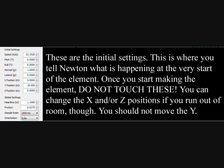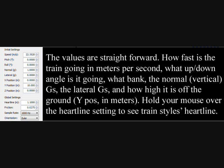These are the initial settings — this is where you tell Newton what is happening at the very start of the element. Once you start making the element, do not touch these. You can change the X or Z positions if you run out of room, though. You should not move the Y. The values are straightforward: how fast the train is going in meters per second, what up or down angle it's going, what bank, the normal or vertical Gs, the lateral Gs, and how high it is off the ground — Y position in meters.